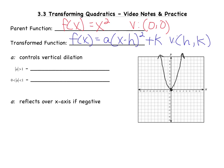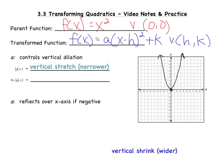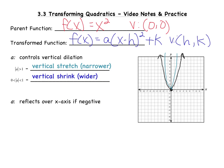Now let's look at the a value. The a value controls vertical dilation — it controls how narrow or how wide your parabola is going to be. If the absolute value of a is greater than 1, you will have a vertical stretch, which means your graph will be narrower, and it will look something like this. If the absolute value of a is greater than 0 but less than 1, you will have a vertical shrink, and it will make your parabola wider, and it would look something like this.